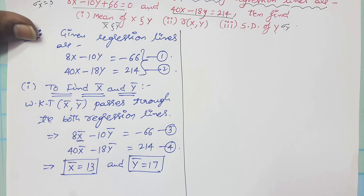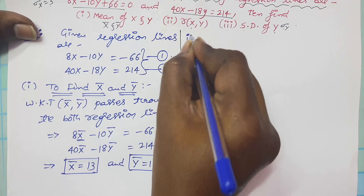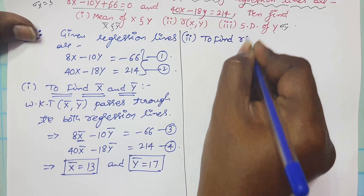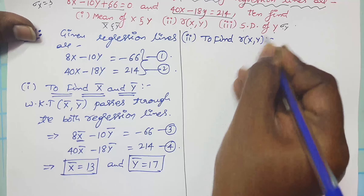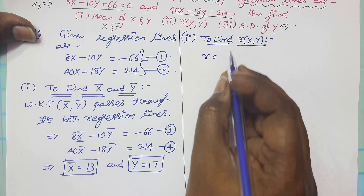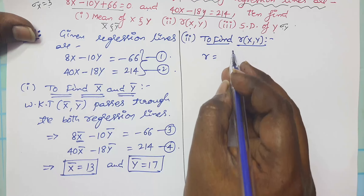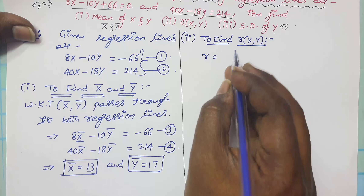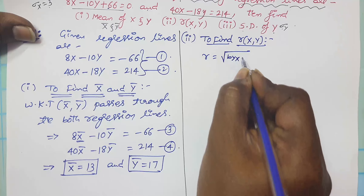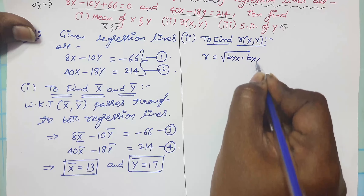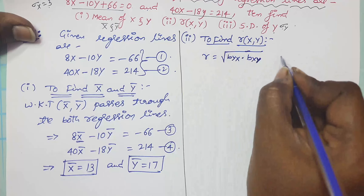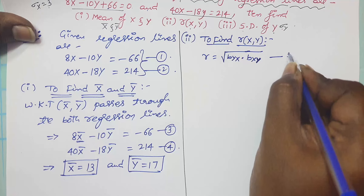Next, we have to find r of x and y. The correlation coefficient r is the geometric mean of the regression coefficients — that is, r equals the square root of byx times bxy. We need to find both byx and bxy.